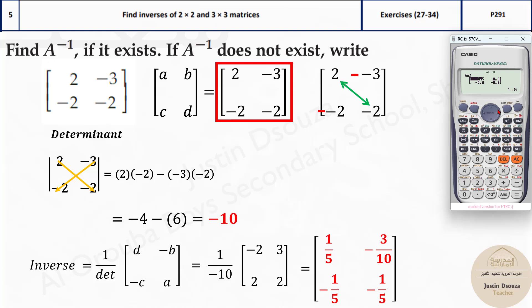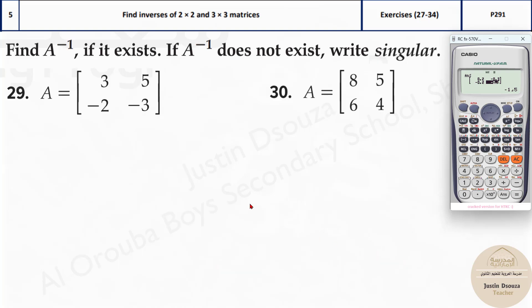Inverse. That's the answer. It's 1. This is the fraction symbol. 1 by 5. Minus 3 by 10. Negative 1 by 5. And negative 1 by 5. That's the answers. So, that's how we do it.